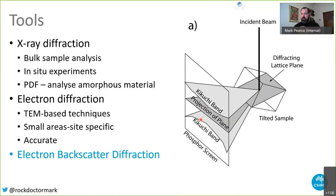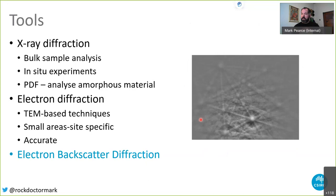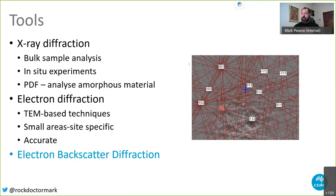Those electrons interact with the minerals and some of the lattice planes will diffract, causing the electrons to exit the sample in a band pattern very similar to how we get peaks on an X-ray diffraction spectrum. For a particular spot we have not one diffracting lattice plane but a whole set, giving us a Kikuchi pattern made up of many bands, each corresponding to different sets of lattice planes diffracting within that spot.